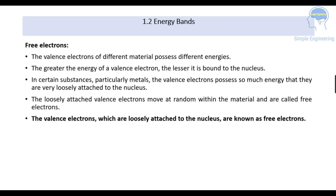Free electrons. The valence electrons of different materials possess different energies. The greater the energy of the valence electron, the lesser it is bound to the nucleus. In certain substances, particularly metals, the valence electrons possess so much energy that they are very loosely attached to the nucleus. These loosely attached valence electrons move randomly within the material and are called free electrons.